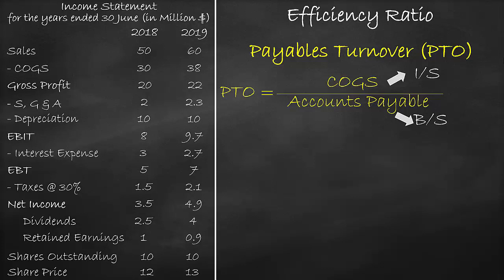The income statement is a flow account, which means it is calculated over a year, while the balance sheet is a stock account, which is calculated on a certain day. Since we cannot compare a year to a day, we need to convert a day into a year by getting the average of the two balance sheet items.